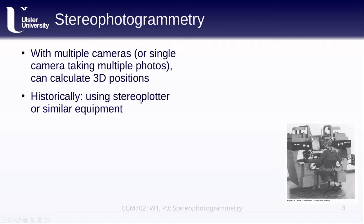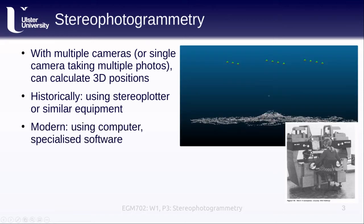Historically this was done using something called a stereo plotter or similar equipment. The way it would work is you would put one image on the left-hand side of the machine and a second image on the right-hand side, then look through a viewfinder that combined the images so you could actually see the three-dimensional shape of whatever was in the photographs. In the modern world we do this using computers and specialized software.